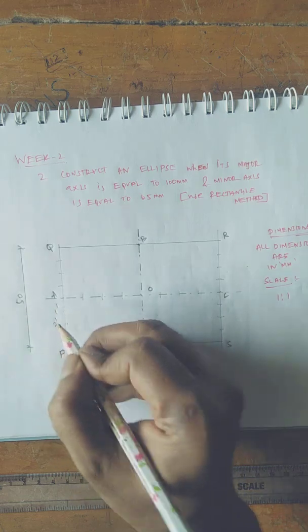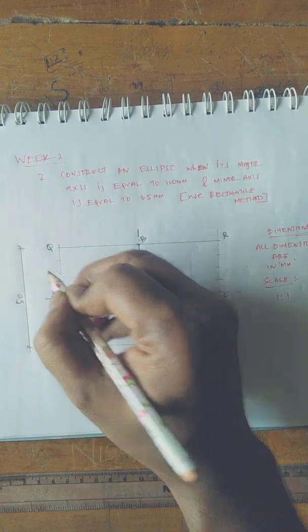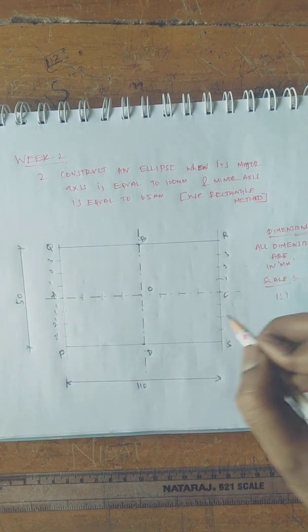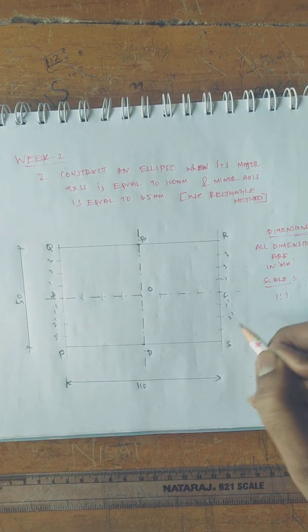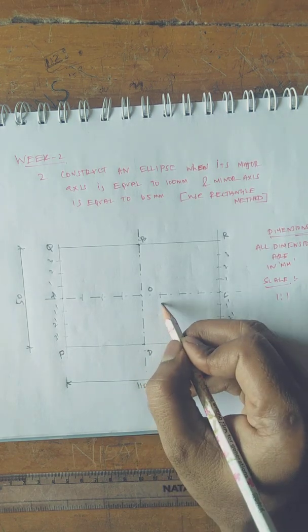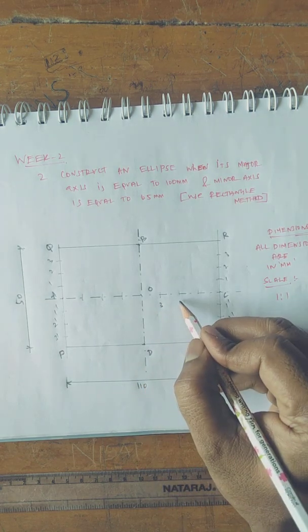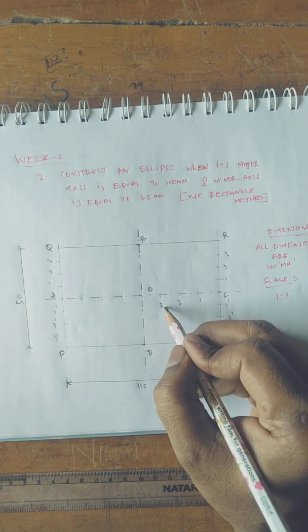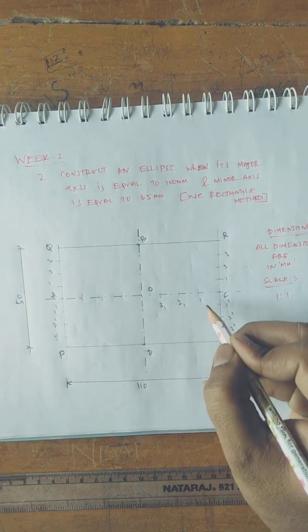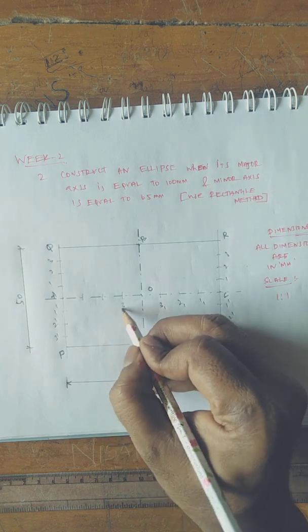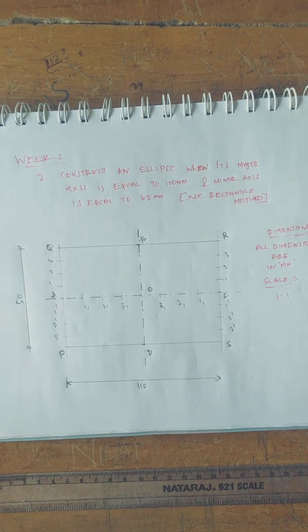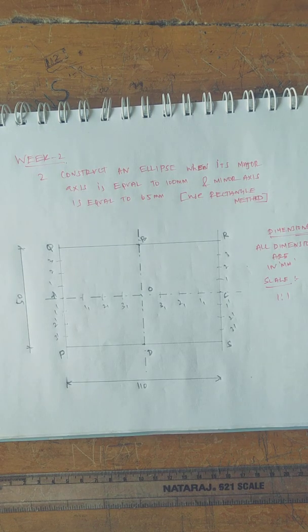Here 1, 2, 3. Similarly 1, 2, 3. 1 dash, 2 dash, 3 dash. Here 3, 2, 1. You just add suffix: 3-1, 2-1, 1-1. The division is taking an important part to draw an ellipse with the rectangle method.